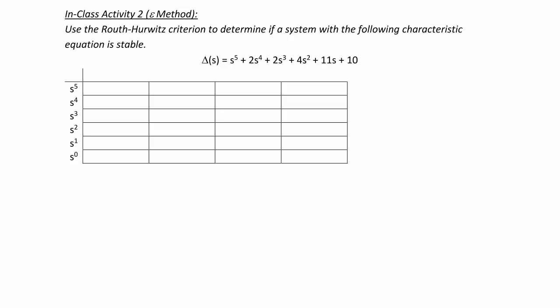The first row is going to have our odd coefficients, so we're going to have 1 and 11. The second row is going to have our even coefficients, so we're going to have 2, 4, and 10.